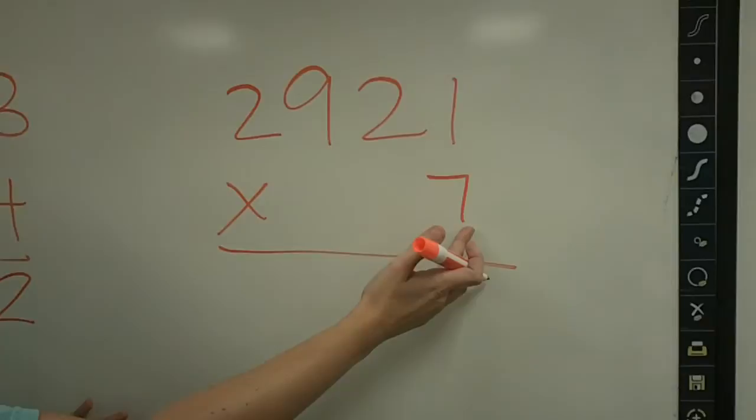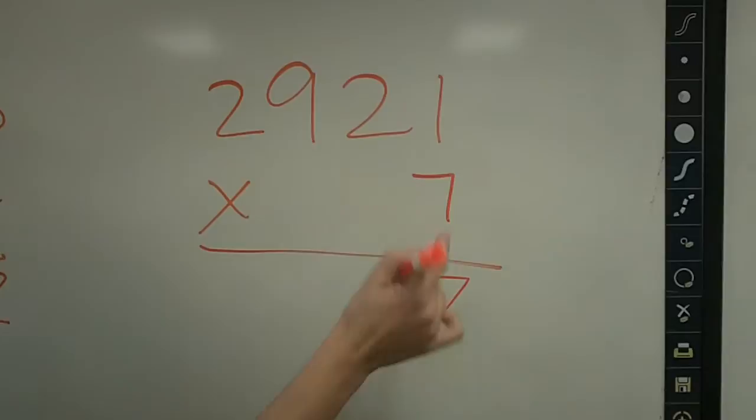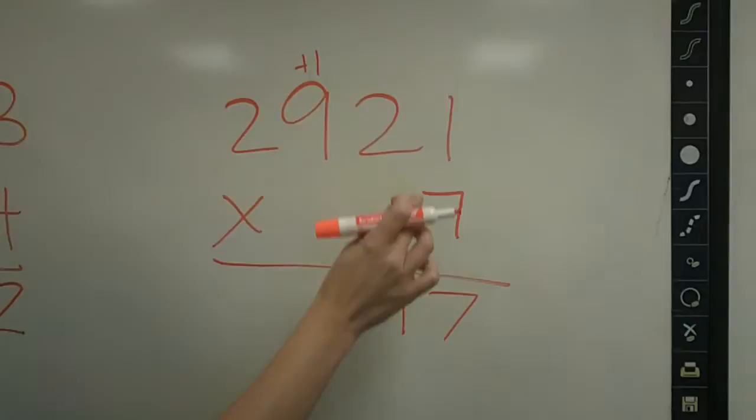So 7 times 1 is 7. 7 times 2 is 14, so we're going to regroup here. 7 times 9 is 63, plus 1 is 64.